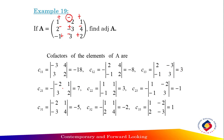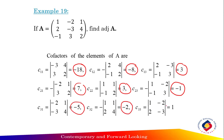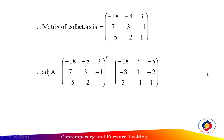Then find C21, C22, C23, C31, C32, and lastly C33. Don't forget the negative signs at the appropriate positions in the sign pattern. All the answers are: -18, -8, 3, 7, 3, -1, -5, -2, 1. Convert these into the matrix of cofactors.